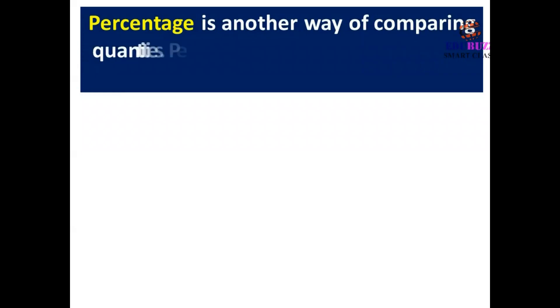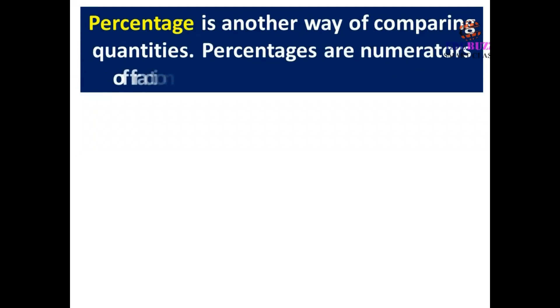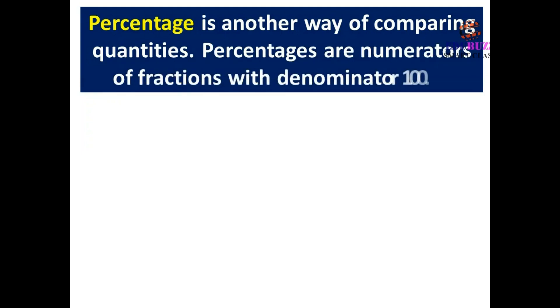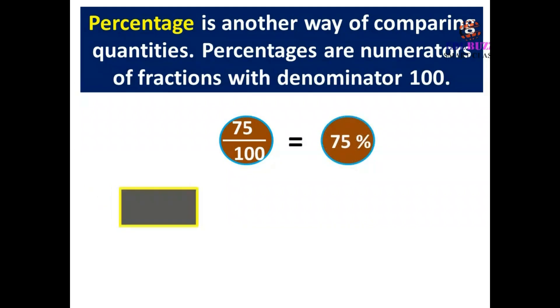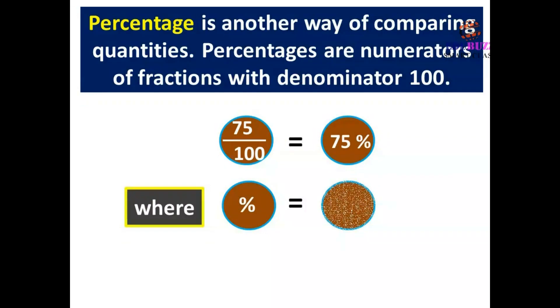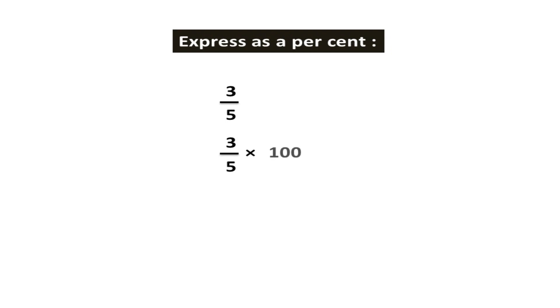Percentage is another way of comparing quantities. Percentages are numerators of fractions with denominator 100. For example, 75/100 = 75%, where percent means 1/100. To express a fraction as a percent: 3/5 × 100/100 = 60/100 = 60%.